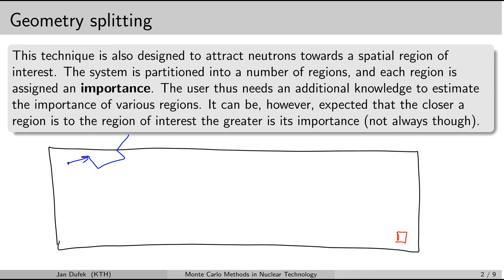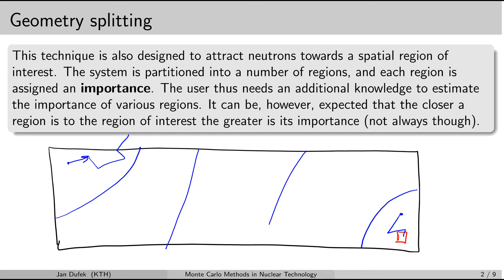So this far part of the system is not going to be very important to us. On the contrary, if you start a neutron history close to the detector, it's much more likely that the neutron may scatter inside the volume of the detector. So that part of the system is going to be much more important. The geometry splitting technique requires that you partition the whole system and assign different importance values to different parts, where the importance expresses the likelihood that neutron histories in that region contribute to the result.